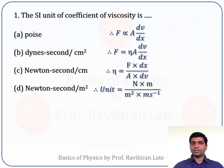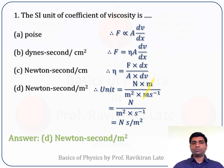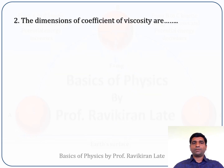Simplifying the units: the meter in the numerator cancels with one meter from the denominator, leaving newton at the numerator and meter square with per second at the denominator. Rearranging, the per second transfers to the numerator giving newton second per meter square. So the SI unit of coefficient of viscosity is newton second per meter square — option D is the correct answer.